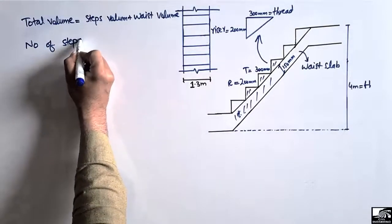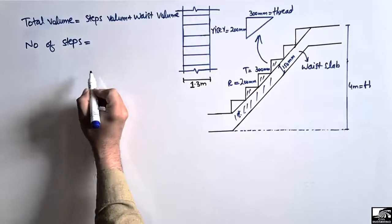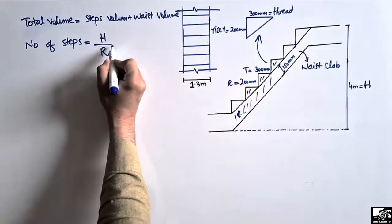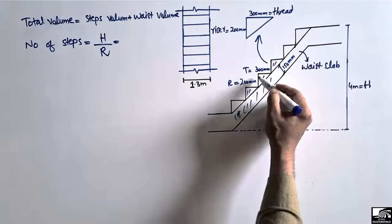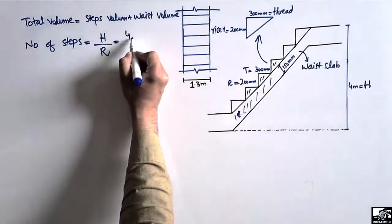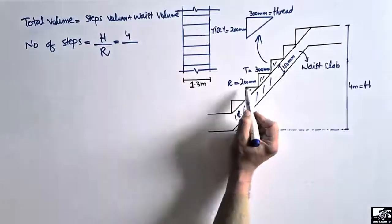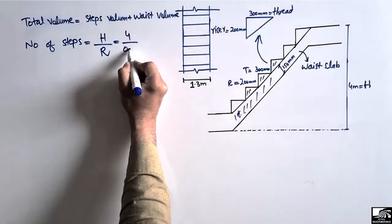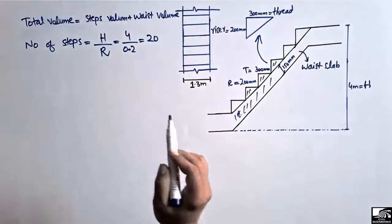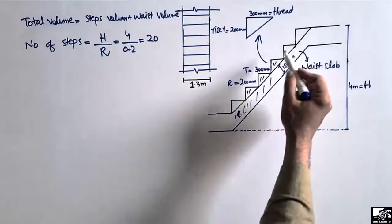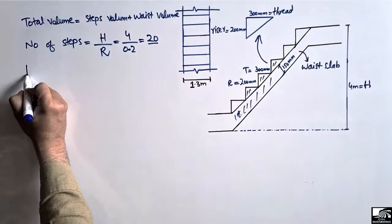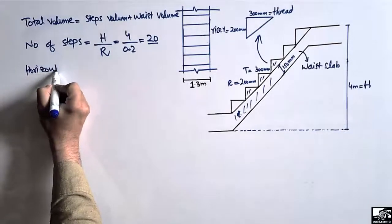The first step is to find out the number of steps in the staircase. Number of steps equals total height divided by the riser. The height is 4 meters and the riser is 200 mm, which is 0.2 meters. So 4 divided by 0.2 gives us 20 — there are 20 total steps in this staircase.